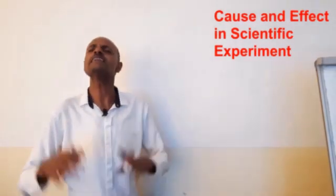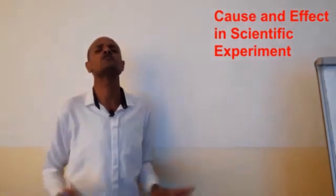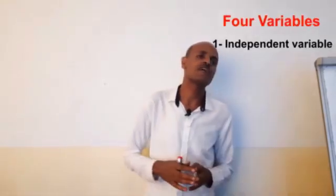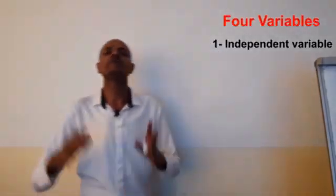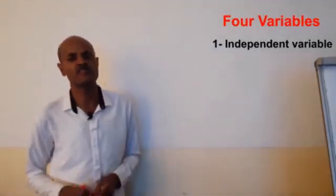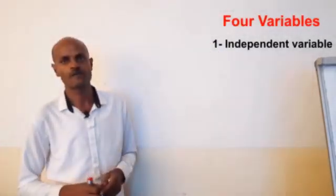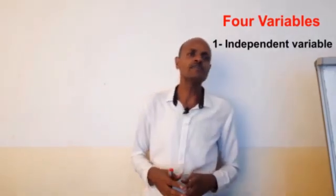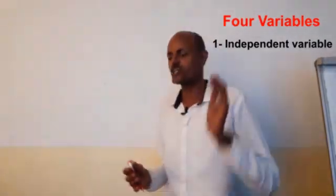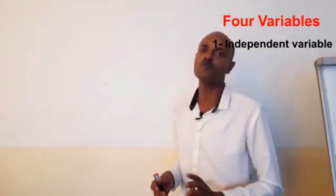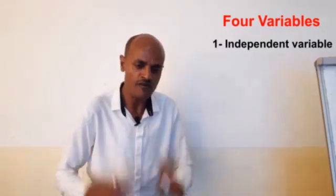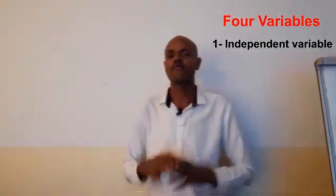In scientific experiments, there are different variables. If you look at this variable, you will see an independent variable. An independent variable is a variable that the scientists change or manipulate to see the outcome of an experiment.